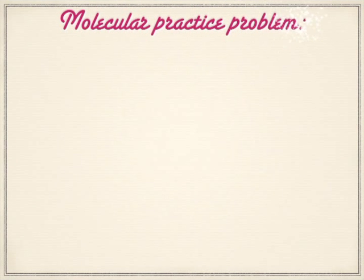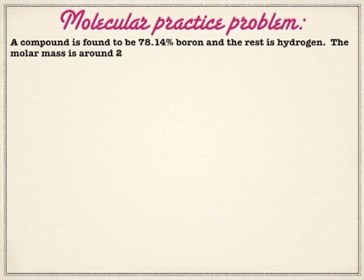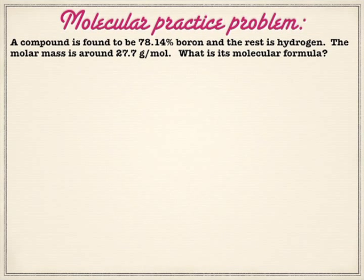So let's take a look at one of these problems. A compound is found to be 78.14% boron, and the rest is hydrogen. The molar mass — red flag, ding ding ding — is around 27.7 grams per mole. What's the molecular formula?